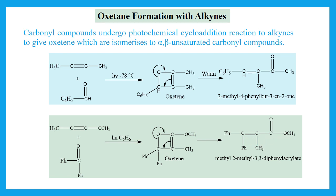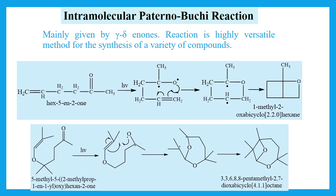Here is another example where the product is the same — an α,β-unsaturated carbonyl compound. After intermolecular Paterno-Buchi reactions, intramolecular Paterno-Buchi reaction is also possible. It is mainly given by γ,δ-unsaturated carbonyl compounds — where the carbonyl carbon is alpha, the next is beta, then gamma, then delta. The efficiency is attributed to the rapid rate of interaction between the excited carbonyl group and the ground-state carbon-carbon double bond. This allows formation of only one isomer in high yield with usually no by-product. The reaction is highly versatile for the synthesis of a variety of bicyclic compounds.